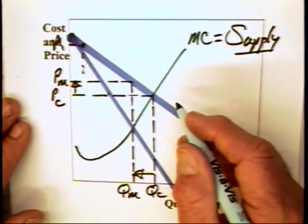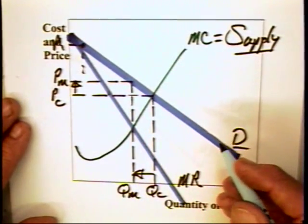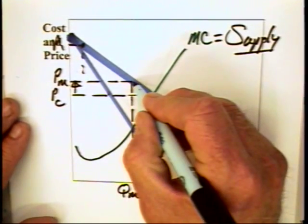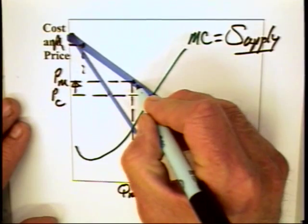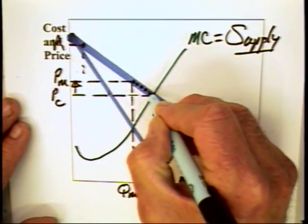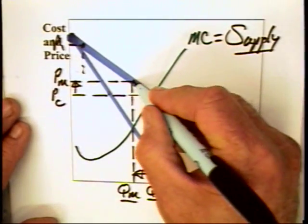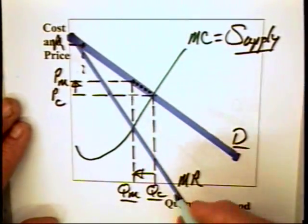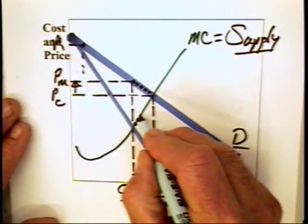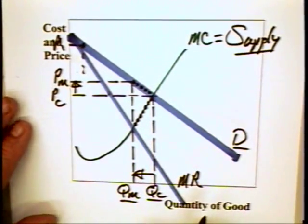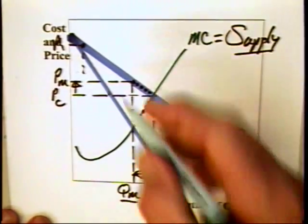Now, there's something else we can say about monopoly. And that is that monopoly is inefficient. And the reason it is inefficient is that the marginal value of each of these units between QM and QC, the marginal value of each of these units, is greater than the marginal cost of producing those units.